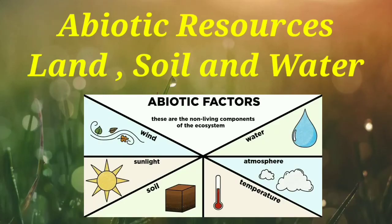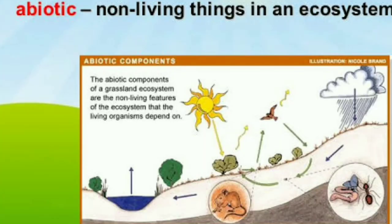Hello children, today we are going to start with Geography Chapter 2, that is Abiotic Resources: Land, Soil and Water. In the previous chapter you have studied about Abiotic Resources. Abiotic Resources comprises of all the non-living things like land, air, water, soil, minerals, rocks, and metals.